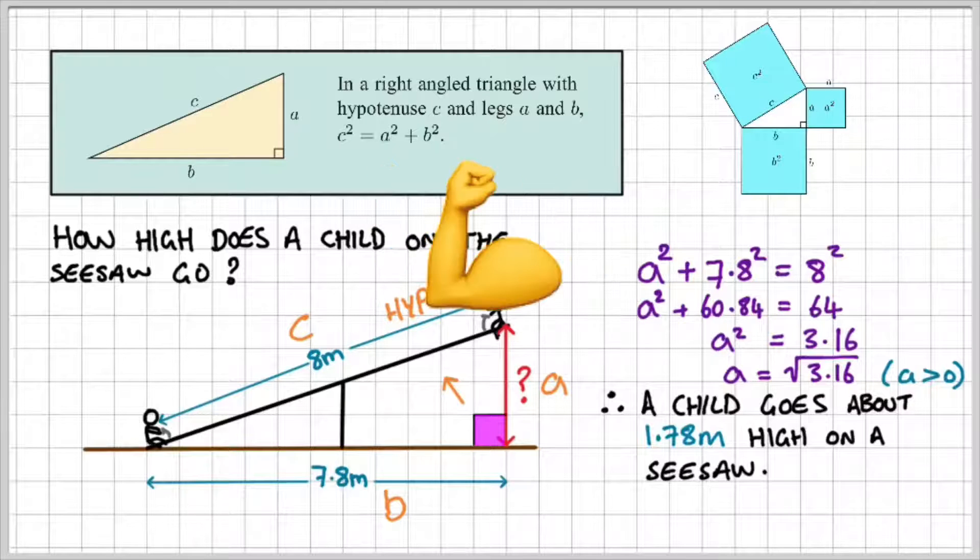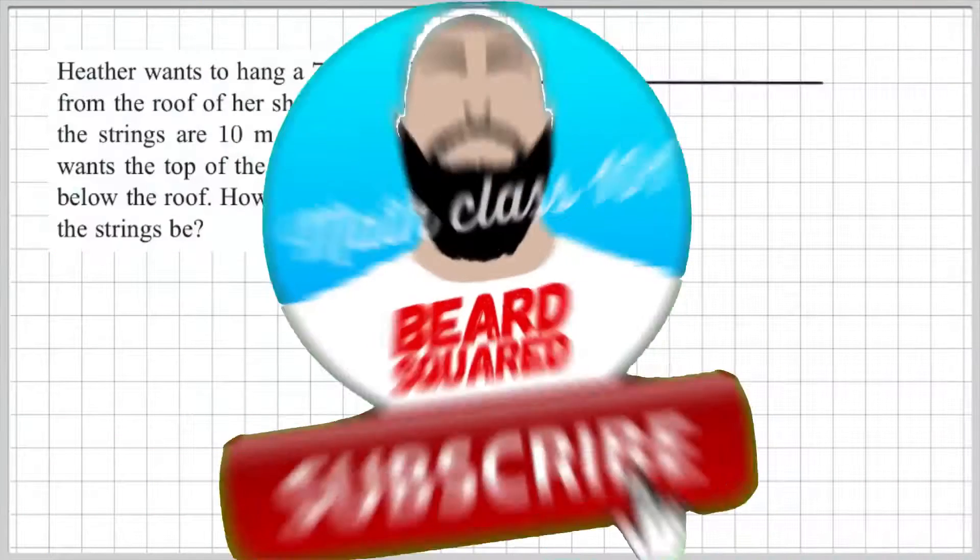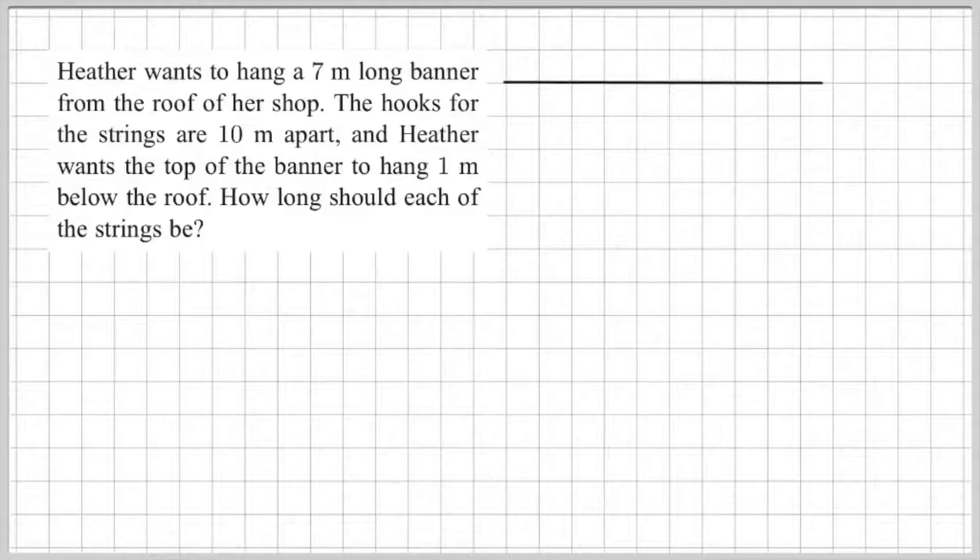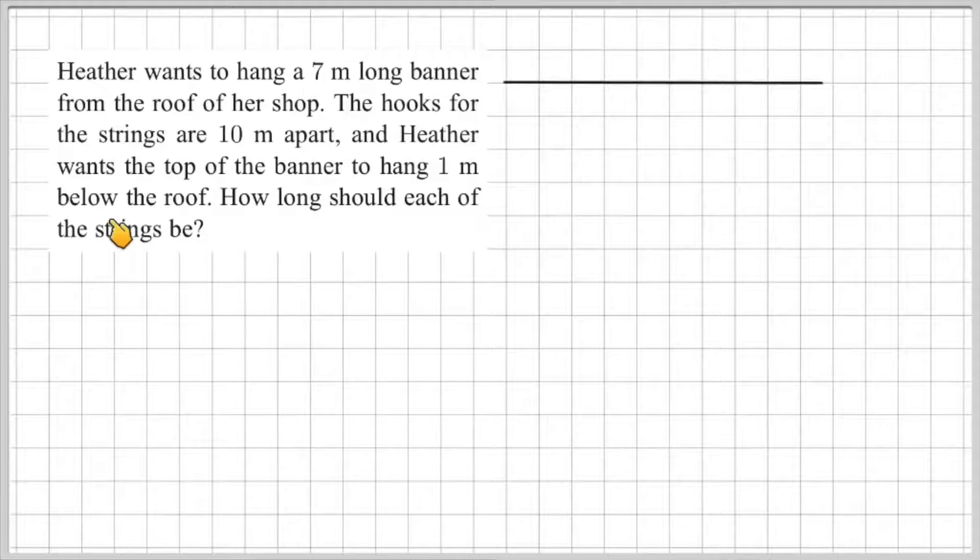So now that you've warmed up and you've got a solid grip on Pythagoras' Theorem, let's get our teeth stuck into it. So here's a problem. Heather wants to hang a 7 meter long banner from the roof of her shop. The hooks for the strings are 10 meters apart, and Heather wants the top of the banner to hang 1 meter below the roof. The question is, how long should each of the strings be?